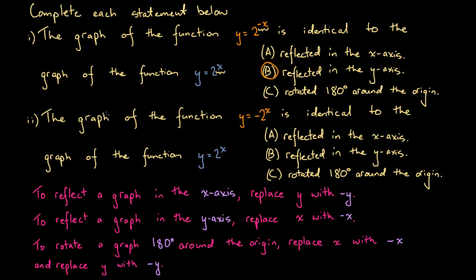What about number two? The graph of the function y equals negative 2 to the power of x is identical to the graph of the function y equals 2 to the x. We have the same three options to choose from.